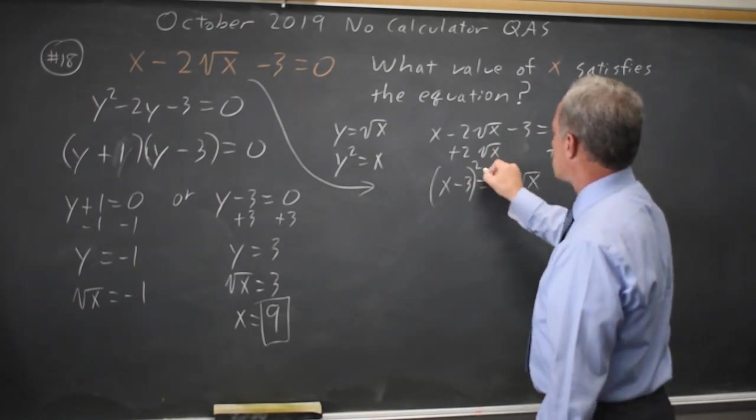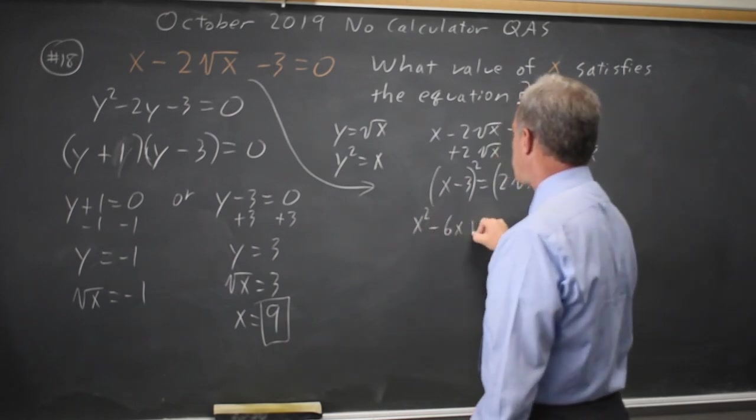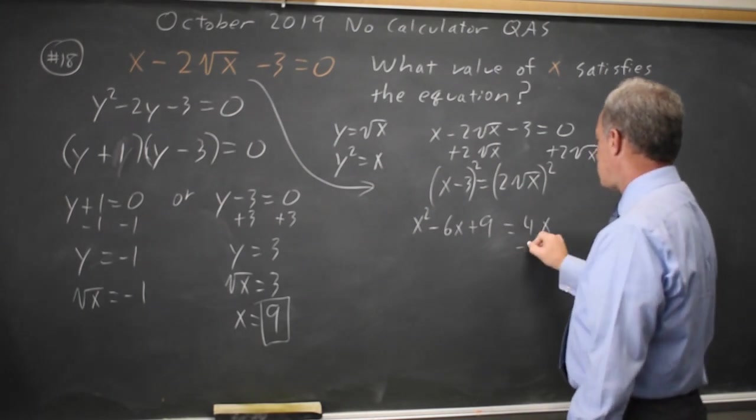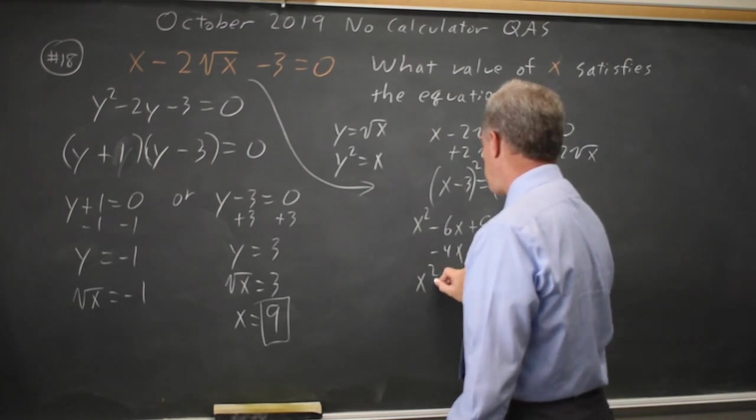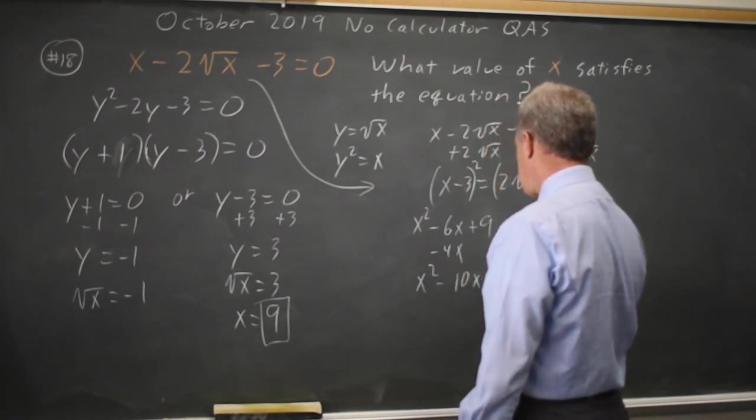Square both sides. x squared minus 6x plus 9 equals 4x. Subtract 4x from both sides. x squared minus 10x plus 9 equals 0.